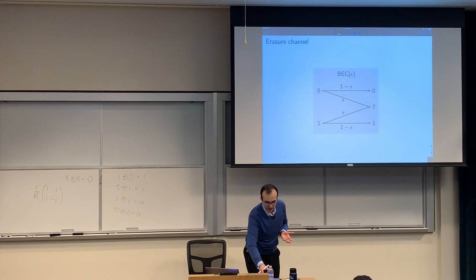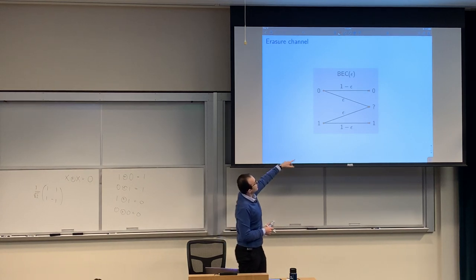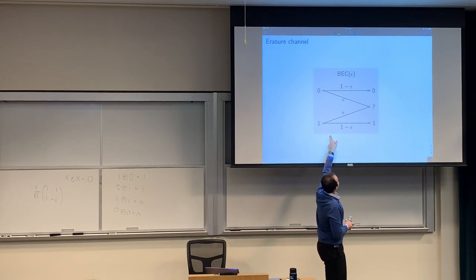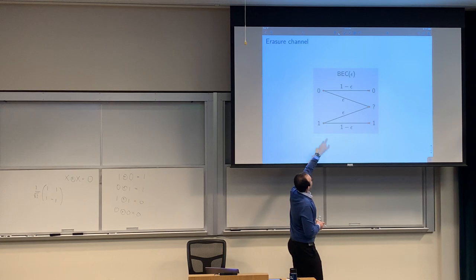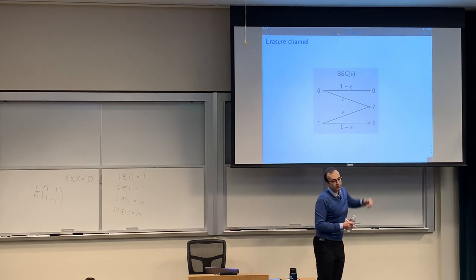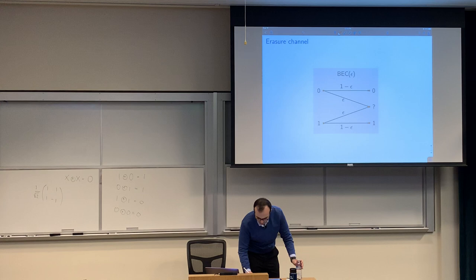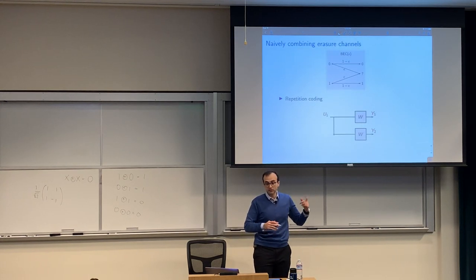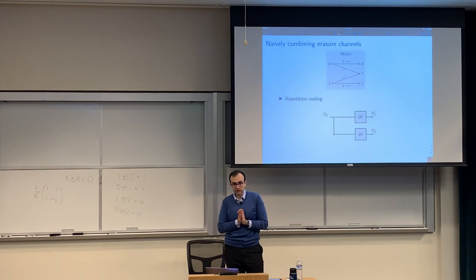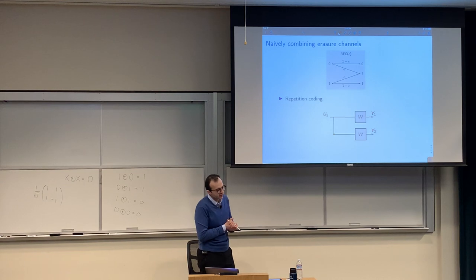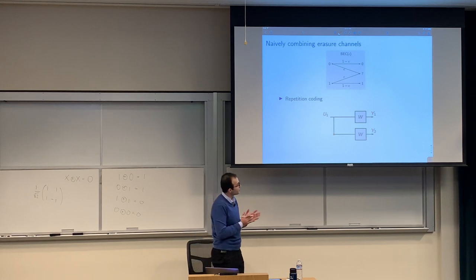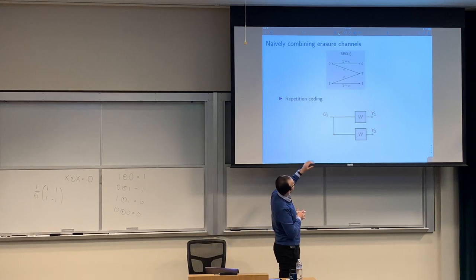Let's go back to the erasure channel. The input alphabet is {0,1}, the output has size three. With probability ε, you get an erasure (question mark); with probability 1 − ε, you get your bit back exactly. There will be an extremely interesting interaction between this channel and the transform we just defined. Let's look at combining multiple erasure channels — first in a naive way, which will not achieve capacity, but will be instructive.